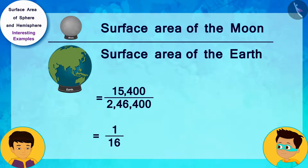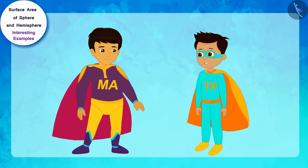And in fact, the ratio of the surface area of the moon and the earth is also 1 by 16. Isn't it amazing? It is. This is really interesting.